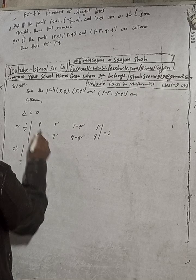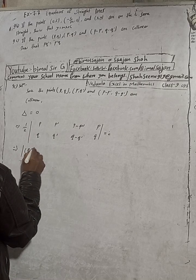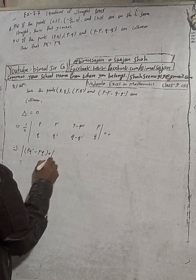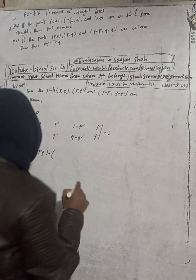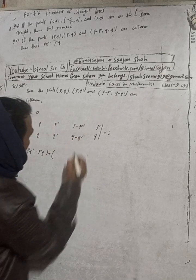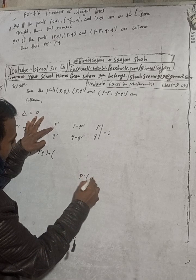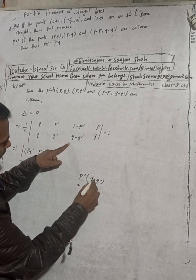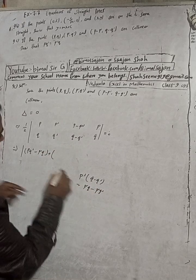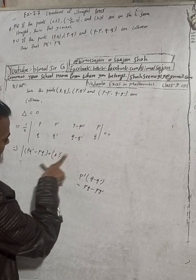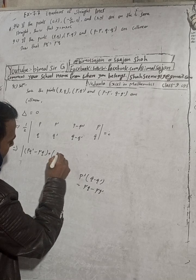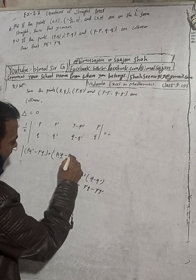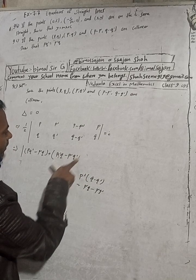P into Q — this is how much? PQ' minus P'Q. Plus this into this: P' into Q minus Q', which is P'Q minus P'Q'. Okay, in terms of this we can add P'Q, P'Q minus P'Q', P'Q'.